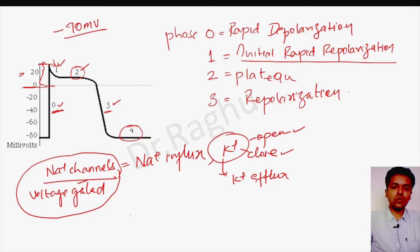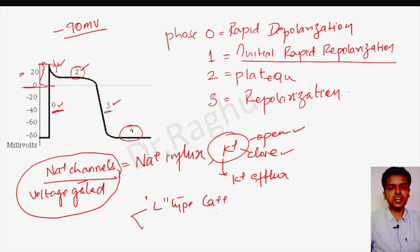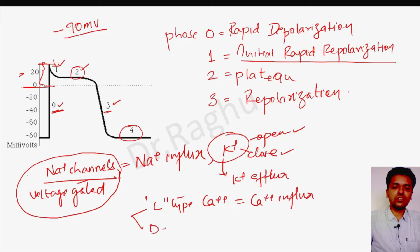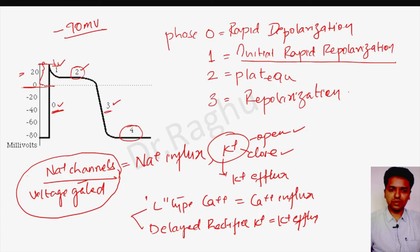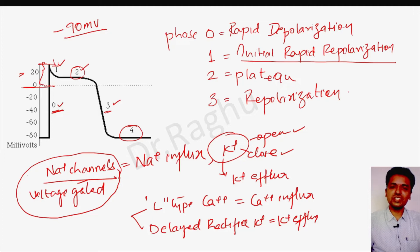After phase one, L-type calcium channels open, causing calcium influx. There is also opening of delayed rectifier potassium channels, causing potassium efflux. In phase two, calcium influx and potassium efflux are occurring simultaneously. Since both calcium and potassium are positive ions, the number of positive ions entering the cell is almost equal to the number leaving, resulting in no much change in the membrane potential — the plateau phase.